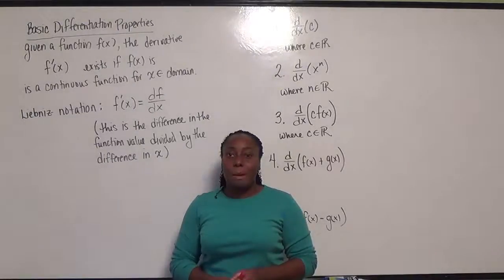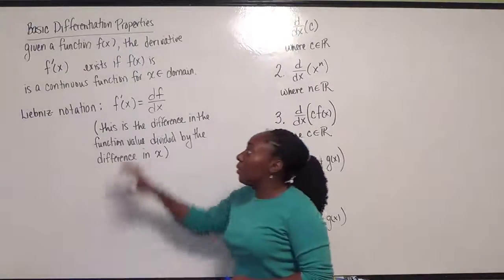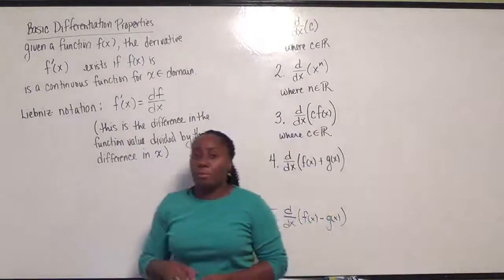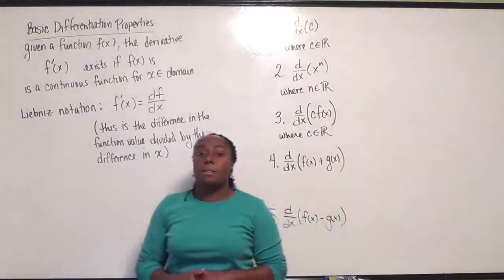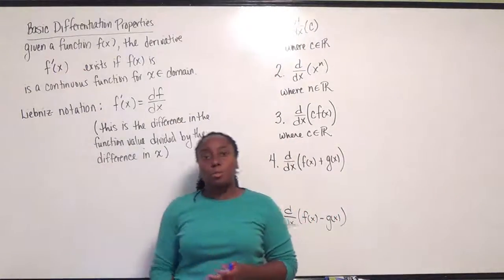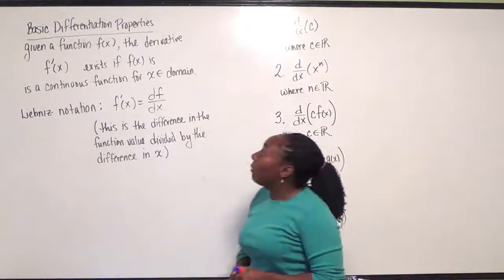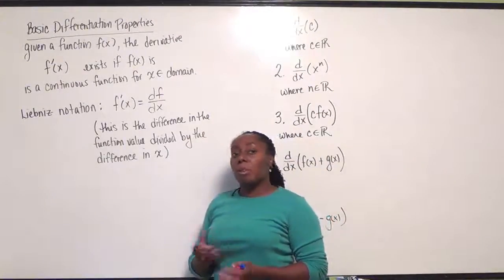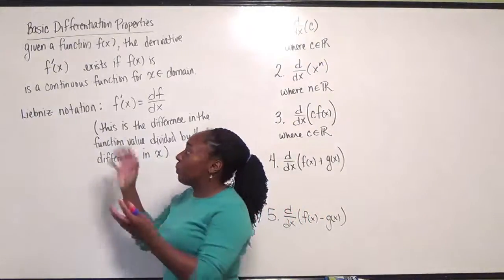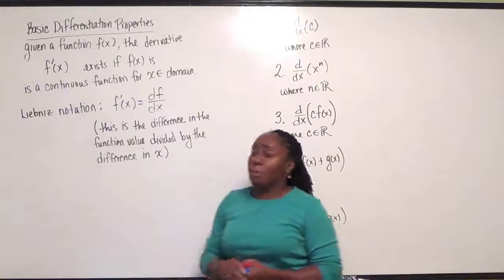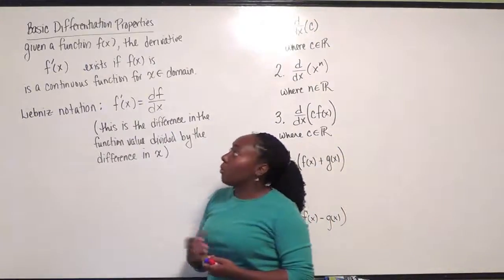In this section we're going to talk about basic differentiation properties. We're going to take a minute to think back - we've talked about the derivative being an instantaneous rate of change, which means there's a limit that we are evaluating. We've talked a little bit about continuity and where functions are continuous, so we're going to put these things together and come up with some of our basic differentiation properties.